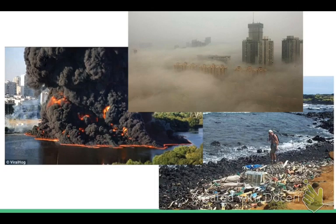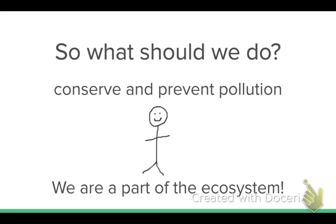These pictures from the early 1970s show a river that caught on fire about three times — meaning the water was extremely polluted — plus a city choked with smog, and a beach covered in washed-up trash. When things got to that point, people and legislators said enough was enough. To prevent these problems, we need to conserve and prevent pollution. We are part of the ecosystem, so it all comes back to taking personal responsibility and encouraging others to do the same.